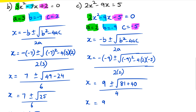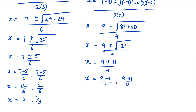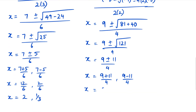So x is equal to nine plus or minus the square root of 121 over four, and the square root of 121 is 11, divided by four. We get x equals nine plus 11 over four, or nine minus 11 over four. In the first case, 20 divided by four is positive five. In the second case, negative two over four simplifies to negative one half. Those are our two final answers.